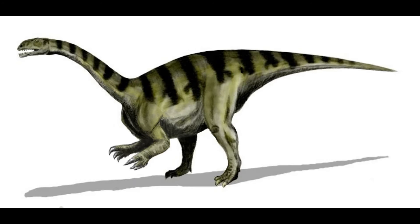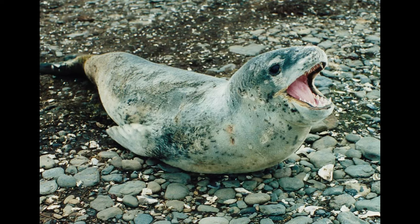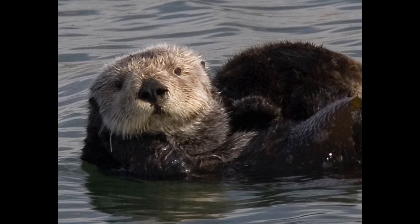The Paleogene period also saw the evolution of marine mammals. Cetaceans — whales, dolphins and porpoises — evolved from terrestrial ancestors, adapting to life in the water with streamlined bodies, flippers and the ability to hold their breath for extended periods. Early cetaceans such as Pakicetus and Ambulocetus provide insights into the remarkable transition from land to sea. Rodents and bats also began to diversify; rodents adapted to wide-ranging ecological niches, while bats evolved flight and echolocation, allowing them to exploit nocturnal niches as efficient insectivores.